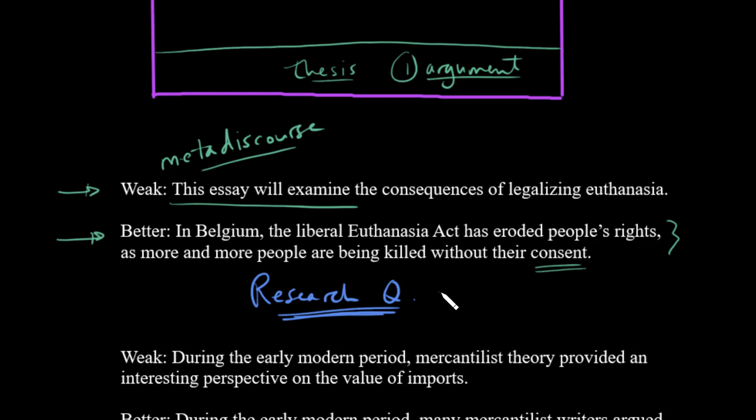The research question is important because it creates tension — there should be something at stake in your thesis. If you're interested in the topic of euthanasia you can feel the tension in this statement. Some people are going to say yes, there is now more euthanasia, but people's consent is being honored and respected. And then other people are going to say, but whose consent is this? Who gets to say who gets to die? So there's a lot at stake, and that's where we want some real tension in the thesis.